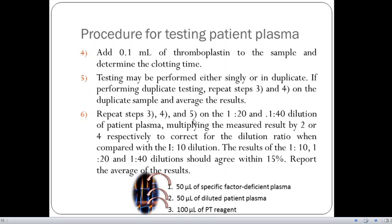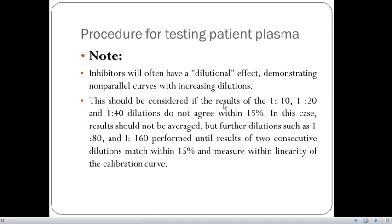On the basis of the dilution of 1 is to 20 and 1 is to 40 dilution of the patient plasma, multiply the measured result by 2 or 4 respectively to correct for the dilution ratio when compared with 1 is to 10 dilution. And the result of the 1 is to 10, 1 is to 20, and 1 is to 40 dilutions should agree within 15%.